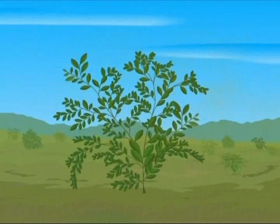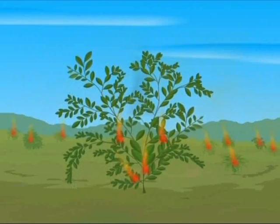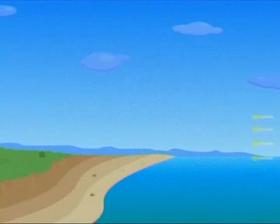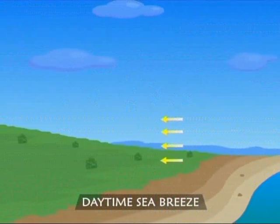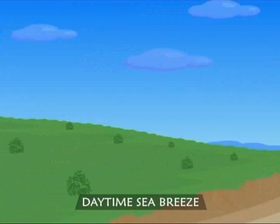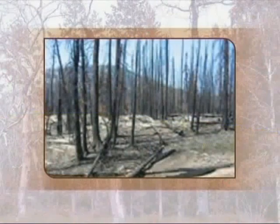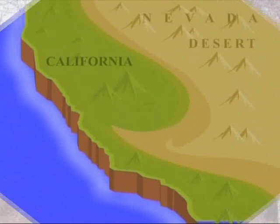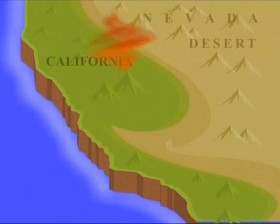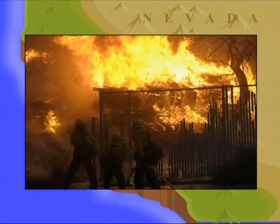Wind and fire are also natural occurrences that shape the life of the shrublands. As summer arrives, daytime breeze blows onto the land from the sea. But sometimes the wind swings around and starts blowing from inland, and the conditions of shrubland can quickly change. In Southern California, when the Santa Ana wind blows, it brings with it hot and dusty air from the desert, causing the temperature to shoot up.